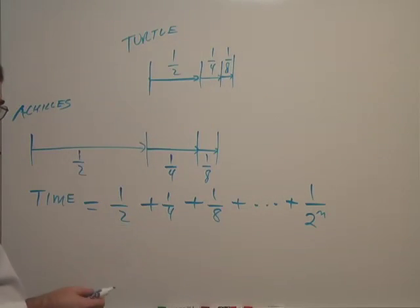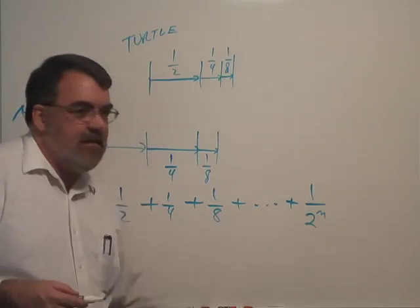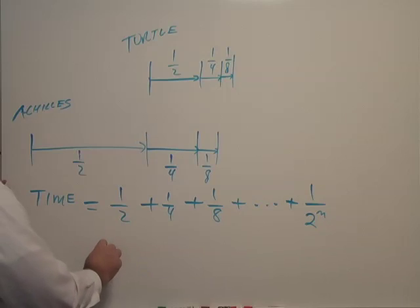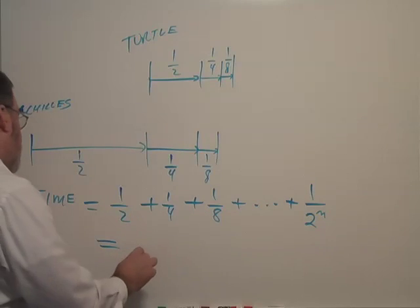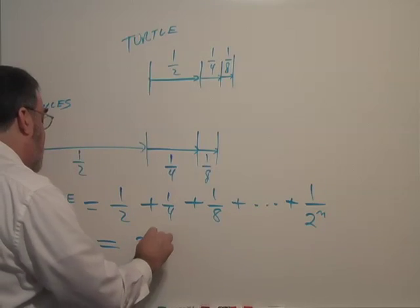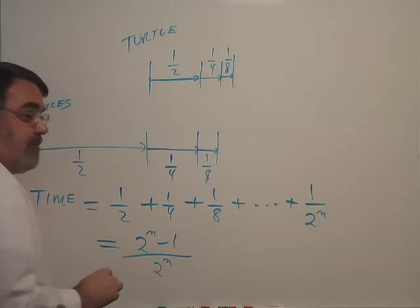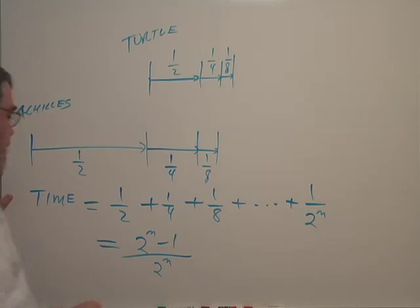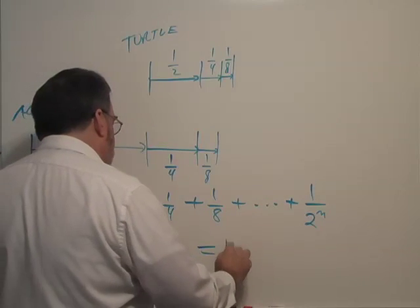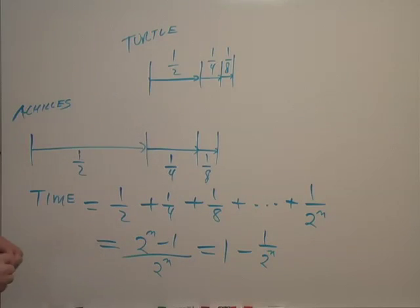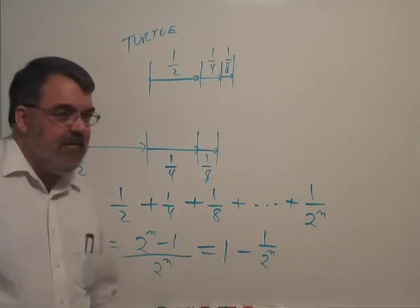Now it's a fairly mundane math to demonstrate that this finite sum, we can add a finite number of numbers, adds up to two to the n minus one divided by two to the n. And then a little more algebra, you show that this is equal to one minus one over two to the n.